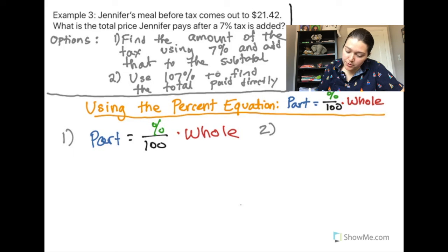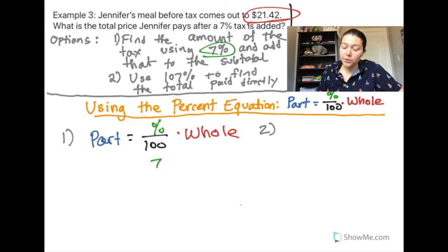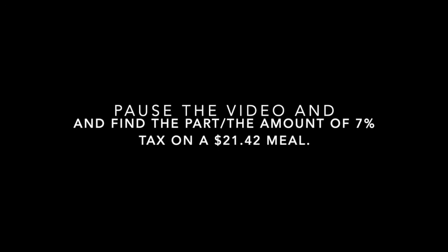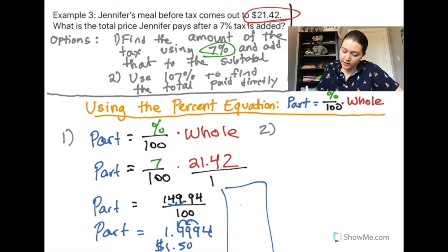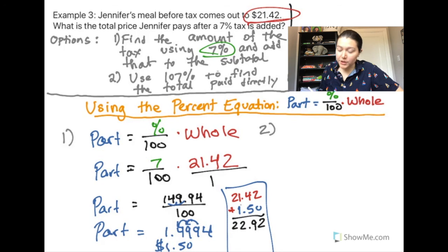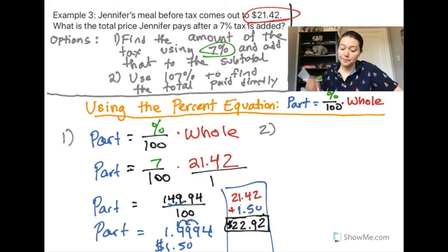Using method one, I use 7% as the percent and $21.42 as the whole. I find the tax — that's the part. The tax comes out to $1.50. But the question asks for the total price after tax, so I add the subtotal of $21.42 plus the tax of $1.50 to get $22.92. That is the total amount Jennifer pays for her meal and the tax.